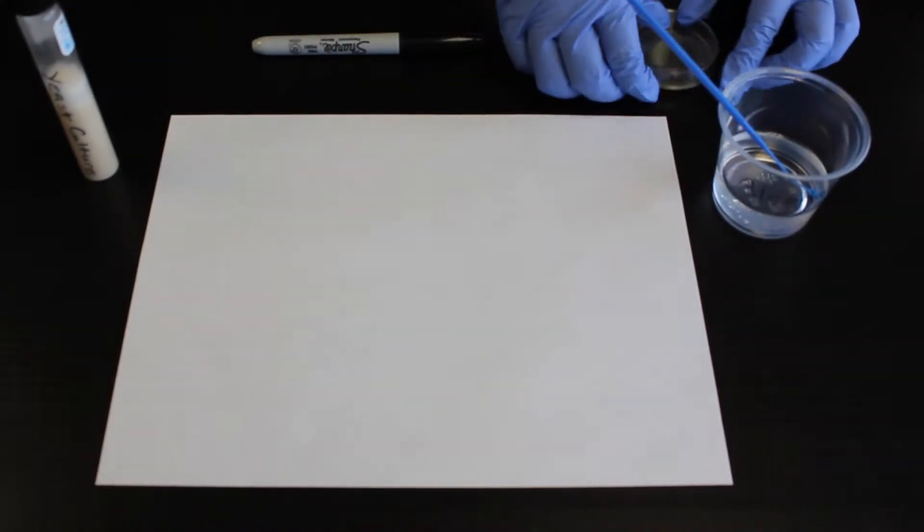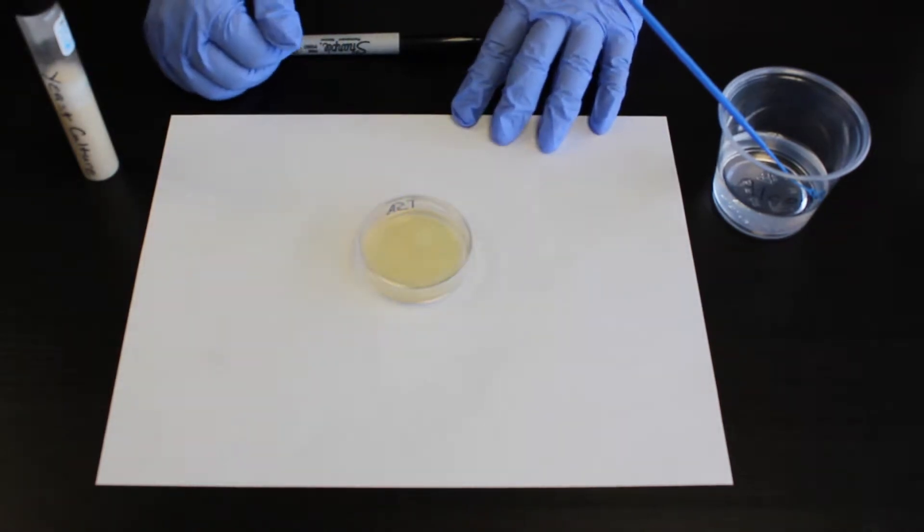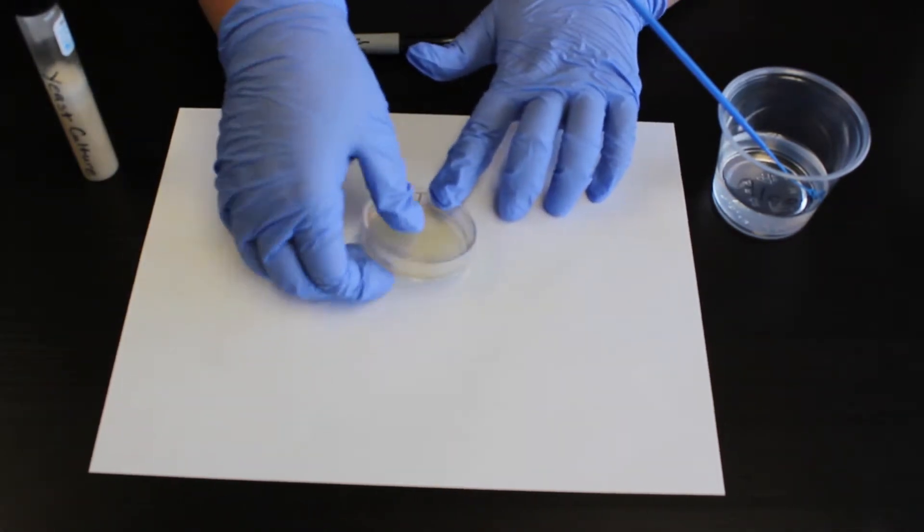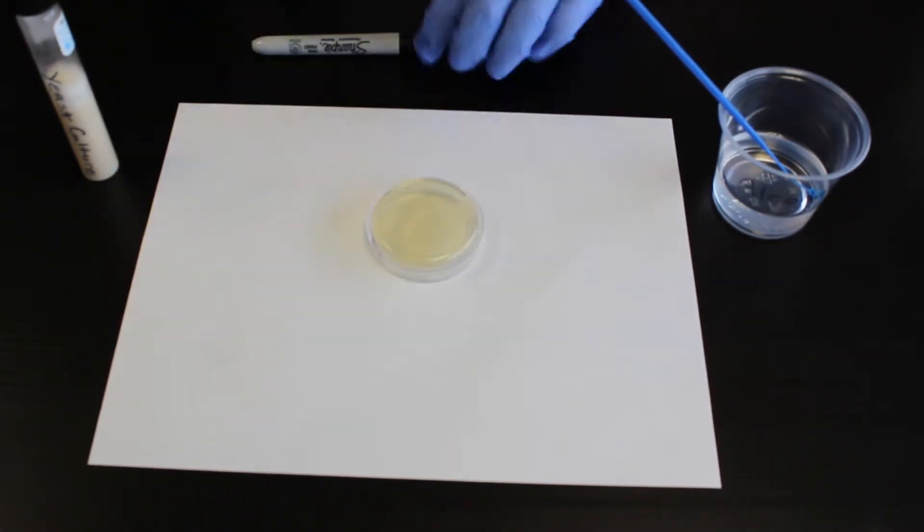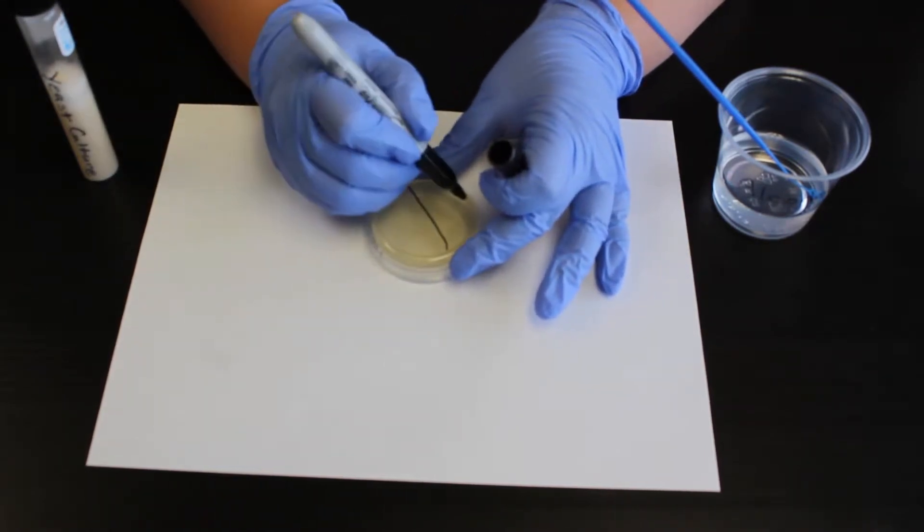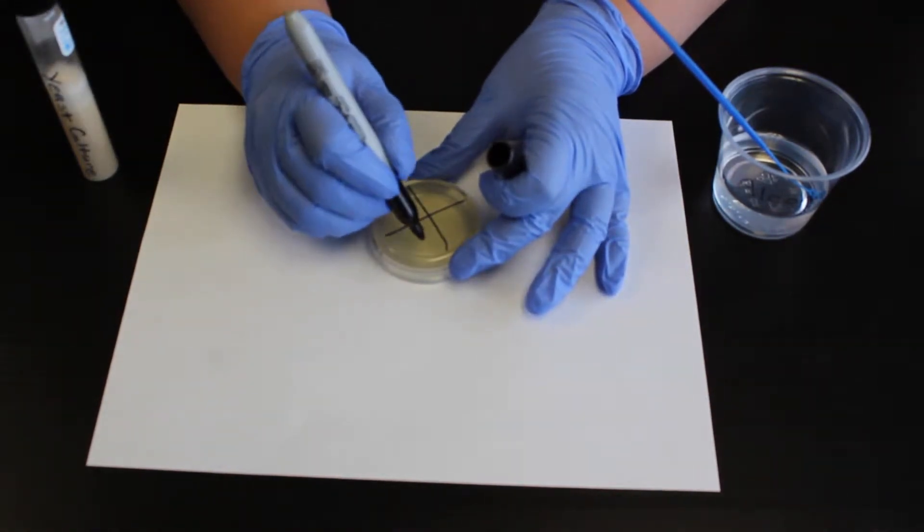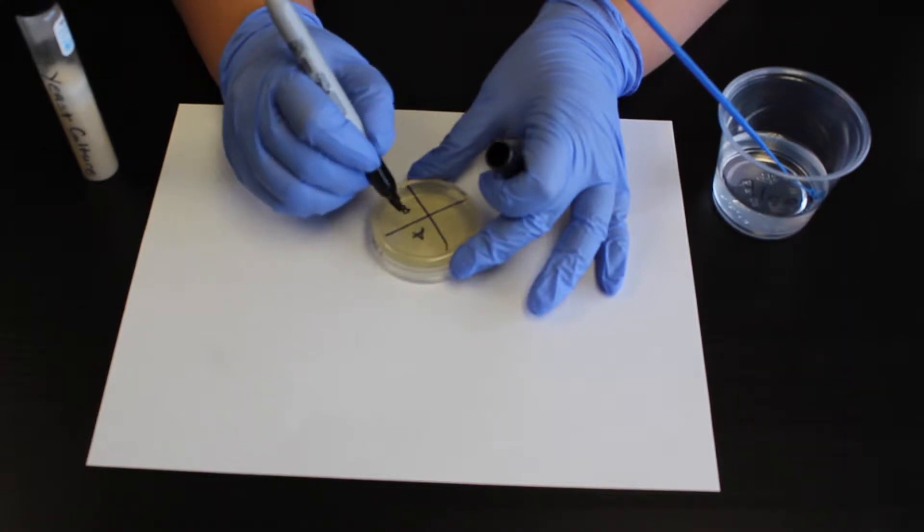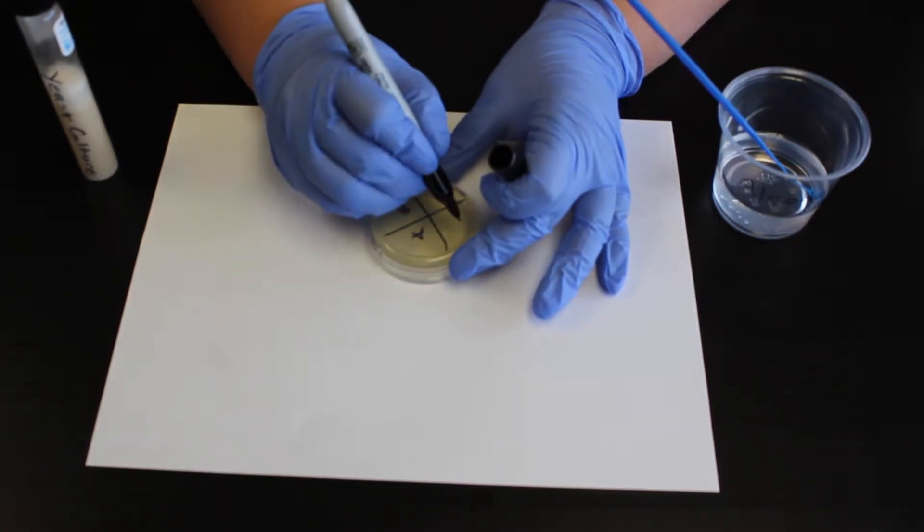Place a 60 millimeter TSA plate on the workspace. Without opening the plate, use a permanent marker to label bottom agar side into four equal sections in order to illustrate quadrants for streaking. Label the quadrants A, B, C and D.